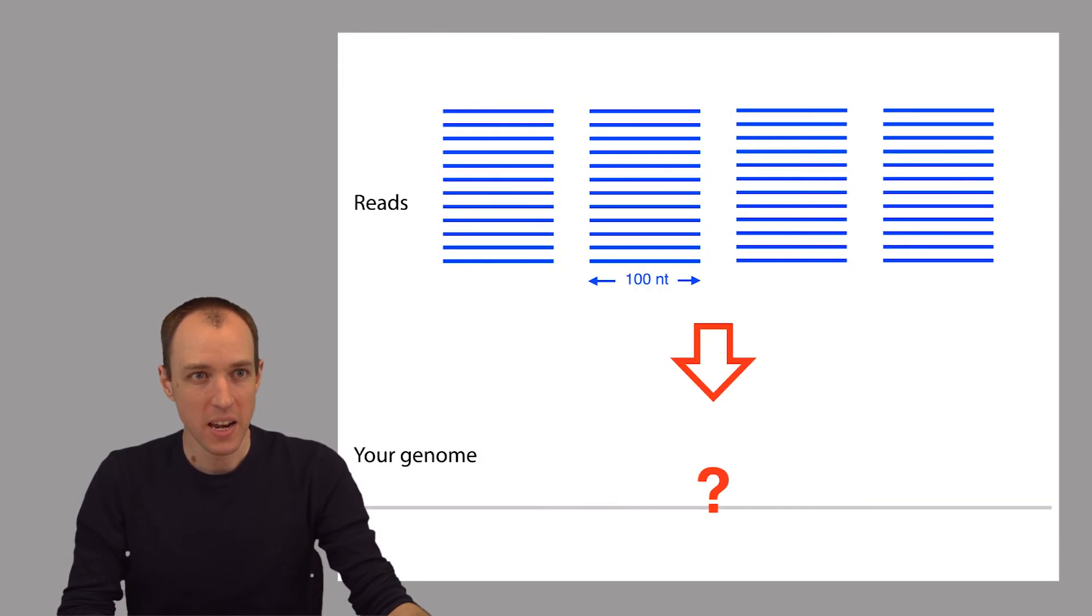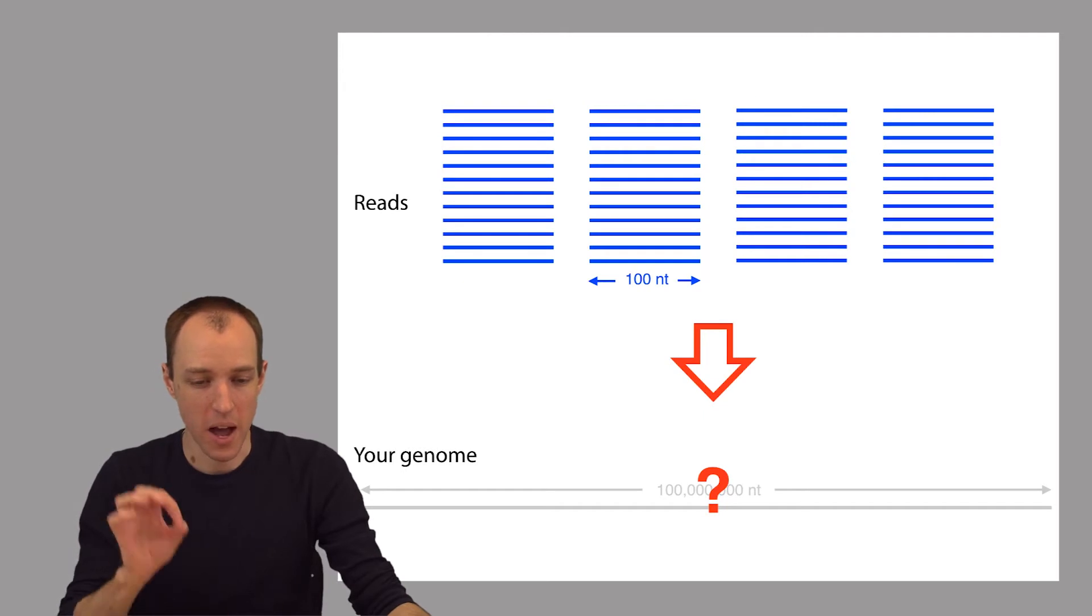Unfortunately, we can't answer these questions just by looking at the reads. The reads themselves are far too short. A single read isn't even long enough to cover a single gene in its entirety. Human genes are on the order of something like thousands of bases long, but one of these second-generation sequencing reads is only on the order of hundreds of bases long.